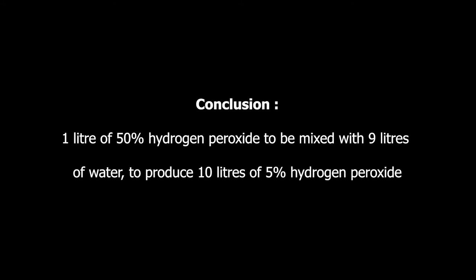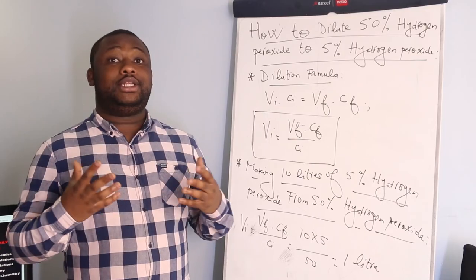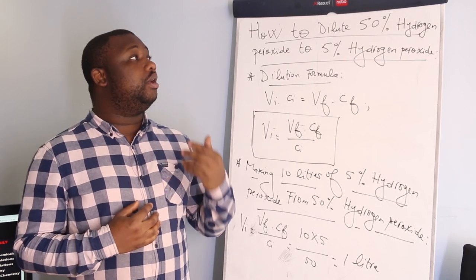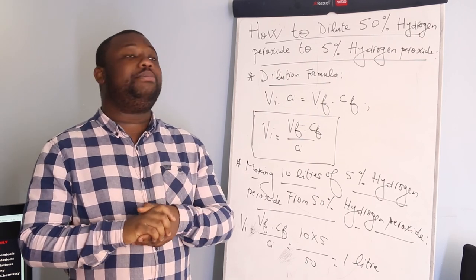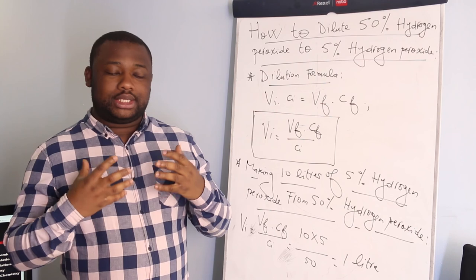Here is the conclusion: to obtain 10 liters of 5% hydrogen peroxide, we need 1 liter of 50% hydrogen peroxide mixed with 9 liters of water. This will produce 10 liters of 5% hydrogen peroxide. That's how you dilute 50% hydrogen peroxide to 5% hydrogen peroxide, explained in a simple and clear way.